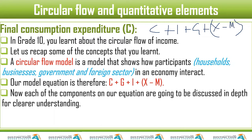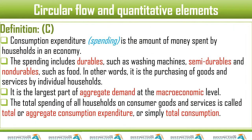Each component of our equation will be discussed in depth. Consumption expenditure or spending is the amount of money spent by households in an economy. The spending includes durable goods, semi-durable goods, and non-durable goods. There are two concepts I'm going to introduce: autonomous consumption and induced consumption.